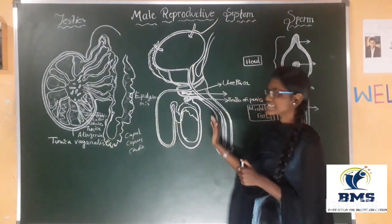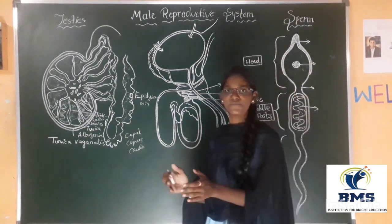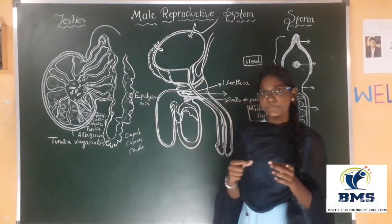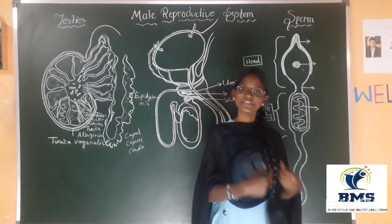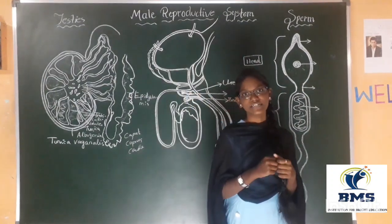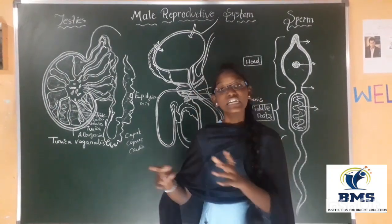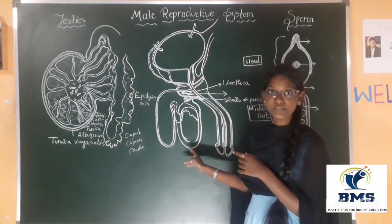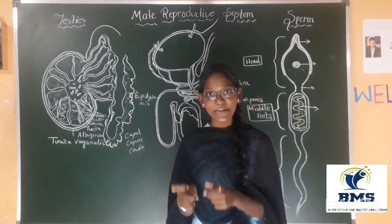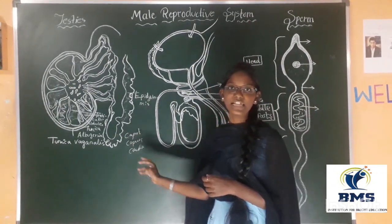Now let us know about the sac which is present outside the testis — that is the scrotum. The scrotum is very helpful to protect the testis. It is outside the body, below the abdominal cavity. The reason for this is that it has to maintain a low temperature — 2 to 2.5 degrees Celsius less than the actual body temperature.